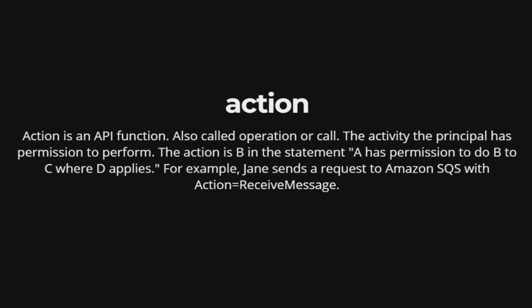Action. Action is an API function, also called operation or call. It refers to the activity the principal has permission to perform. The action is B in the statement 'A has permission to do B to C where D applies.' For example, Jane sends a request to Amazon SQS with action equals ReceiveMessage.